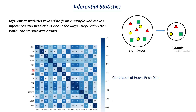Looking at the RM column, which represents the average number of rooms in a house, it has a positive correlation value of 0.7 with price. This makes sense — more rooms means a bigger house and a higher price. So there is a positive correlation between number of rooms and price: if one value increases, the other also increases. These are two kinds of correlation: positive and negative. Correlation is not the only concept in inferential statistics; there are many other techniques used to get insights from data.